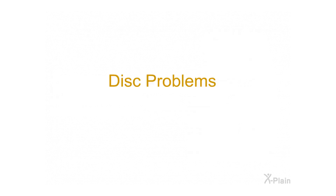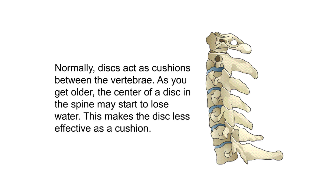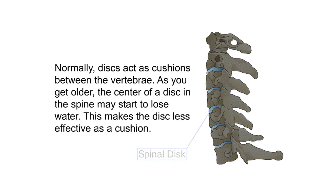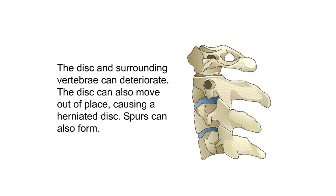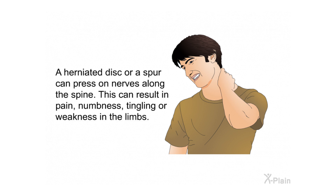Disc problems. Normally, discs act as cushions between the vertebrae. As you get older, the center of a disc may start to lose water, making it less effective as a cushion. The disc and surrounding vertebrae can deteriorate, and the disc can move out of place, causing a herniated disc. Spurs can also form. A herniated disc or spur can press on nerves along the spine, resulting in pain, numbness, tingling, or weakness in the limbs.